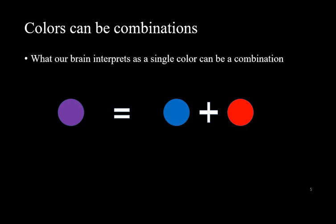What we see as a color of light does not even have to be a single wavelength. It can be a combination of different colors. For example, the color purple is a combination of two different colors, blue and red.